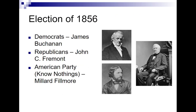Let's move into the election of 1856. Your Democratic nominee is going to be James Buchanan, while your Republicans are going to nominate John C. Fremont — he's kind of an unknown factor. And then the American Party, this little third party, is going to nominate Millard Fillmore, who is a failed president who would like to get elected again. He was the VP for Zachary Taylor and took over when Zachary Taylor died.